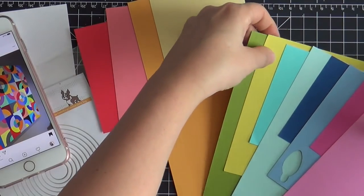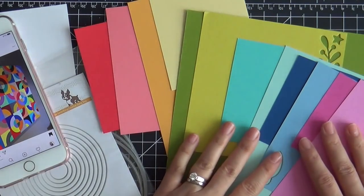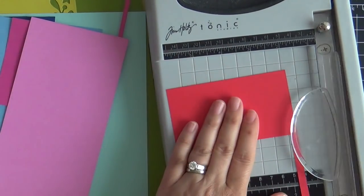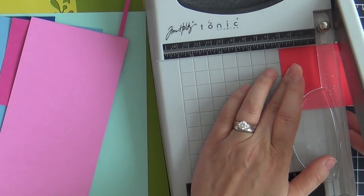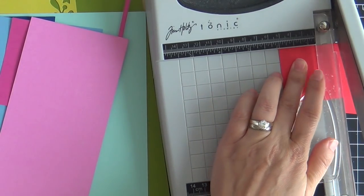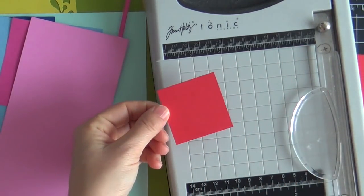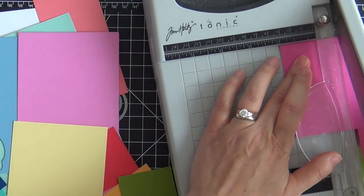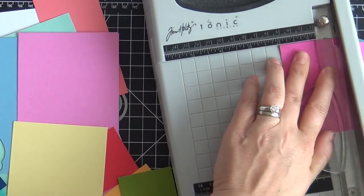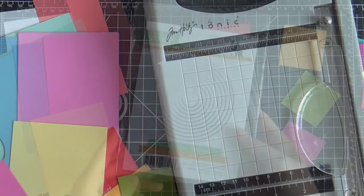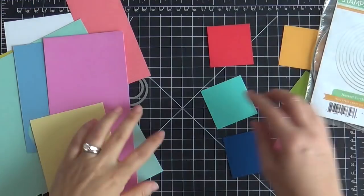So I took out 12 different colors of solid color cardstock, different brands. For six of the colored cardstocks, I'm trimming two inch by two inch squares using the Tim Holtz guillotine trimmer. Of course you could do whatever size square you want or maybe if you have a square die that would work too. I went ahead and trimmed six squares.